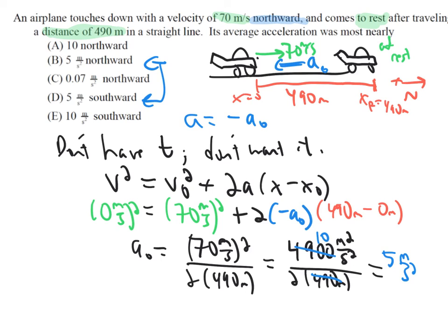if the velocity going to my right is northward, then the acceleration going to the left should be southward, so I should end up with and do end up with D.